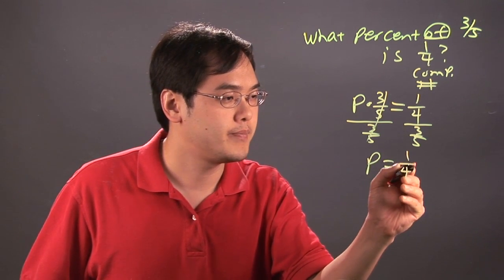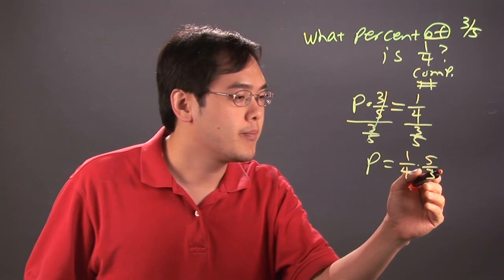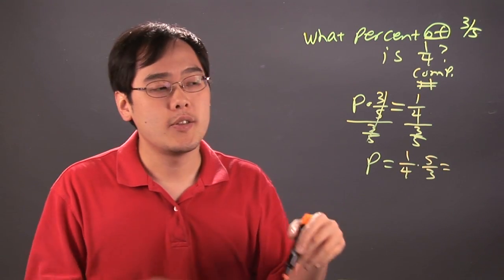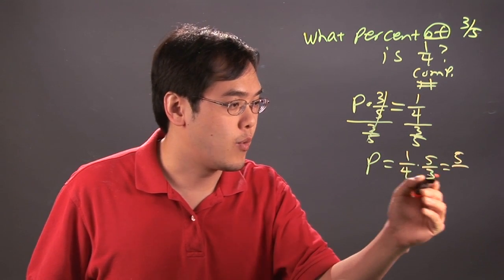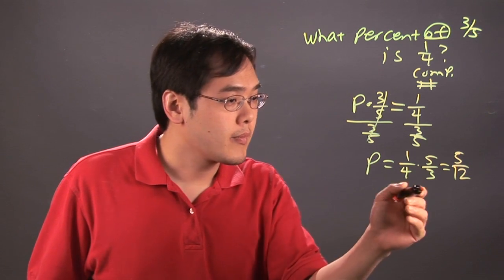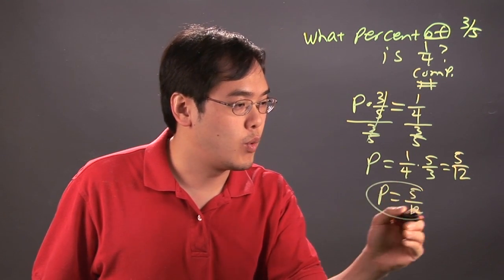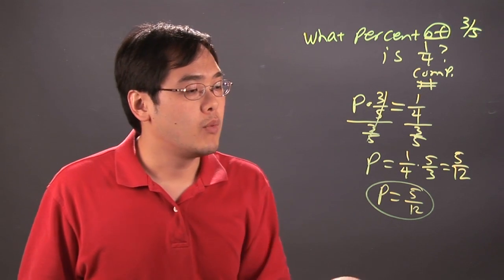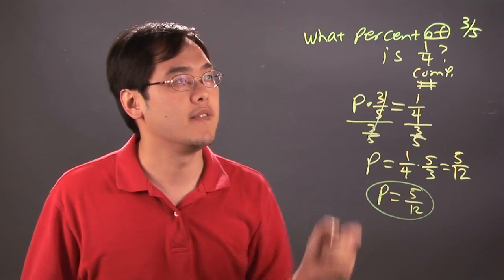So this is one-fourth times five-thirds, and you multiply across. There's nothing to reduce, so you multiply the one and the five, which is five, and the four and three which is twelve. So p is equal to five over twelve. Basically what we're saying is one-fourth is five-twelfths of three-fifths.